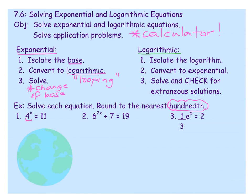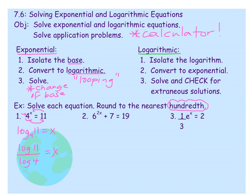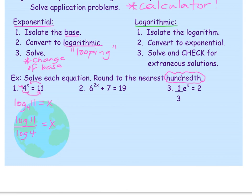Step two: convert to logarithmic. We write log as our prefix. The base of the exponential problem becomes the base of our logarithm — log base 4. We're taking the logarithm of 11, and it equals x. So we need to evaluate log base 4 of 11. Using the change of base formula, we rewrite it as log 11 divided by log 4. Type log(11) divided by log(4) into your calculator — make sure you don't cancel out the log terms.